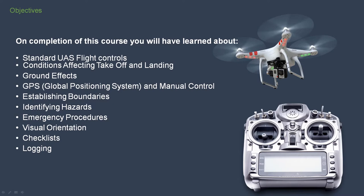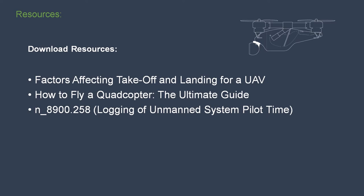On completion of this course you will have learned about standard UAS flight controls, conditions affecting takeoff and landing, ground effects, GPS, global positioning system and manual control, establishing boundaries, identifying hazards, emergency procedures, visual orientation, checklists and logging. Download resources for this class include factors affecting takeoff and landing for a UAV, how to fly a quadcopter, the ultimate guide, and logging of unmanned system pilot time.